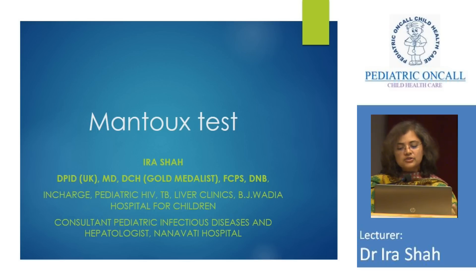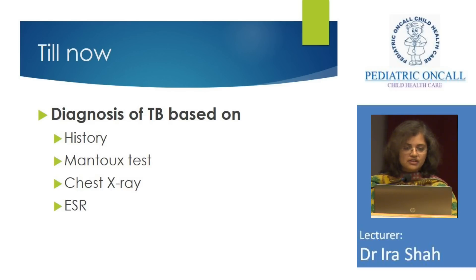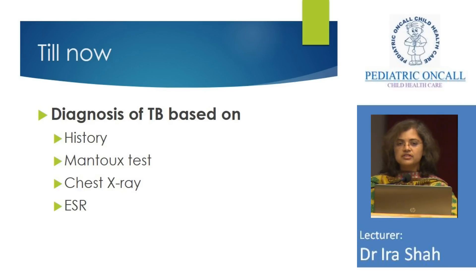And then you have these MANTUs which are of different strengths — 1 TU, 2 TU, 5 TU, 10 TU — and you don't know what to use. Till now, diagnosis of TB was based on history, MANTU test, chest X-ray, and ESR.